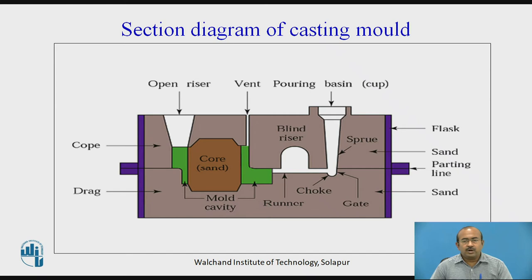The section diagram of casting molds shown on the screen provides a cross-sectional view of that particular casting mold. The cope half, drag half, open riser, and vents are shown. The pouring basin is shown; material poured through it flows through the sprue, then passes through the gate and choke, further moving from the runner to the mold cavity. Different types of risers are shown — open riser and blind riser — along with the flask, parting line, and sand.